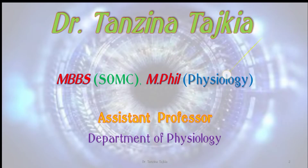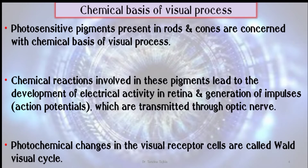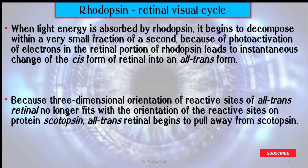Today's lecture is about rhodopsin retinal visual cycle. First, what is the chemical basis of visual process? Photosensitive pigments present in rods and cones are concerned with the chemical basis of visual process. The chemical reactions involved in these pigments lead to development of electrical activity in the retina and generation of impulses transmitted through the optic nerve. These photochemical changes in visual receptor cells are called the visual cycle.